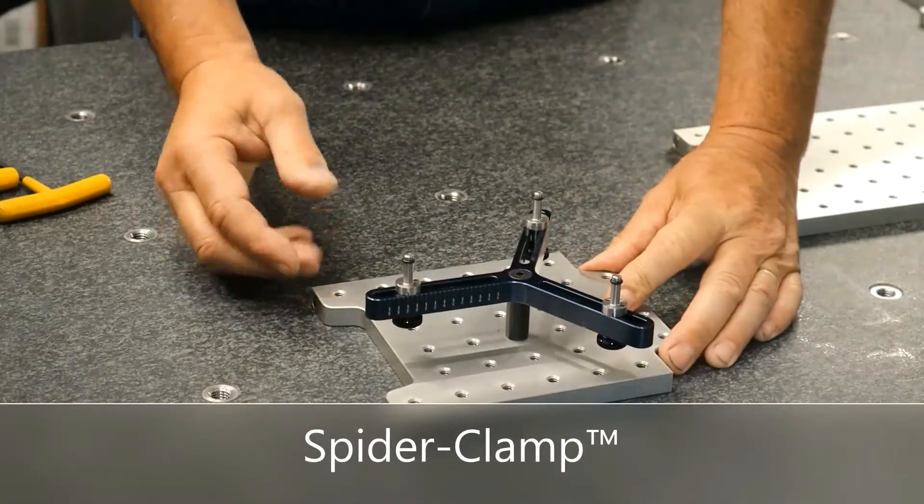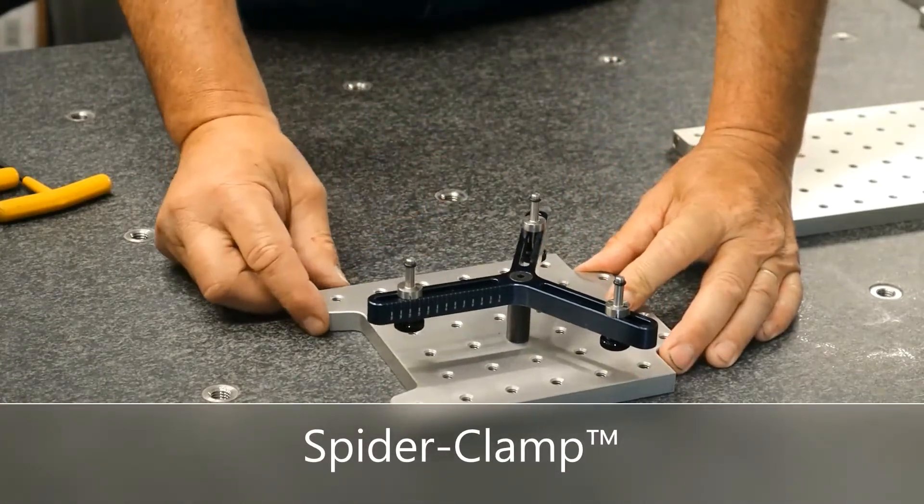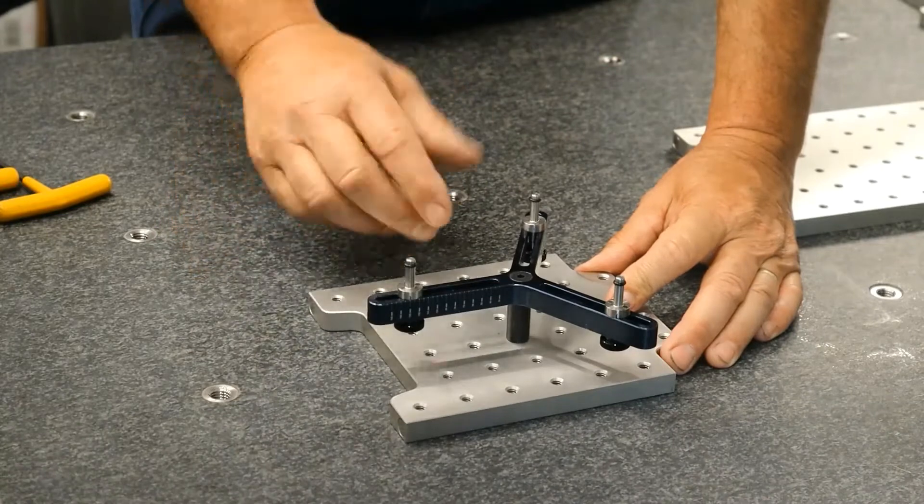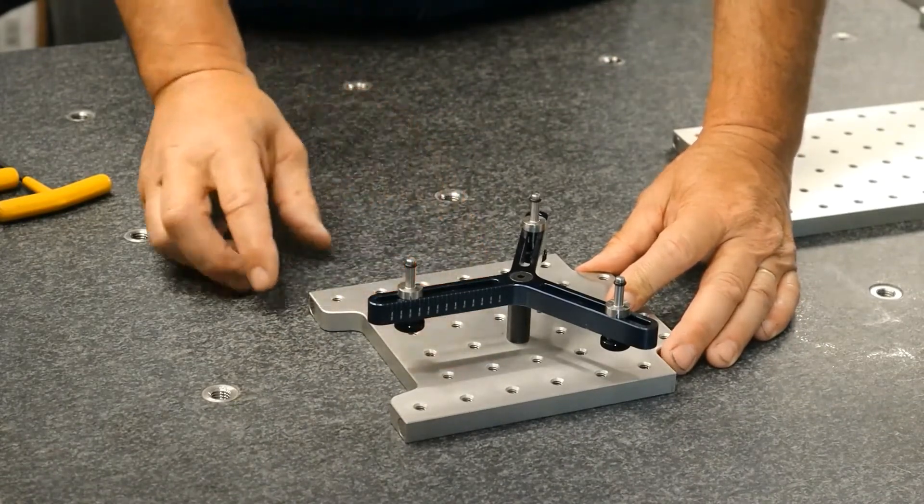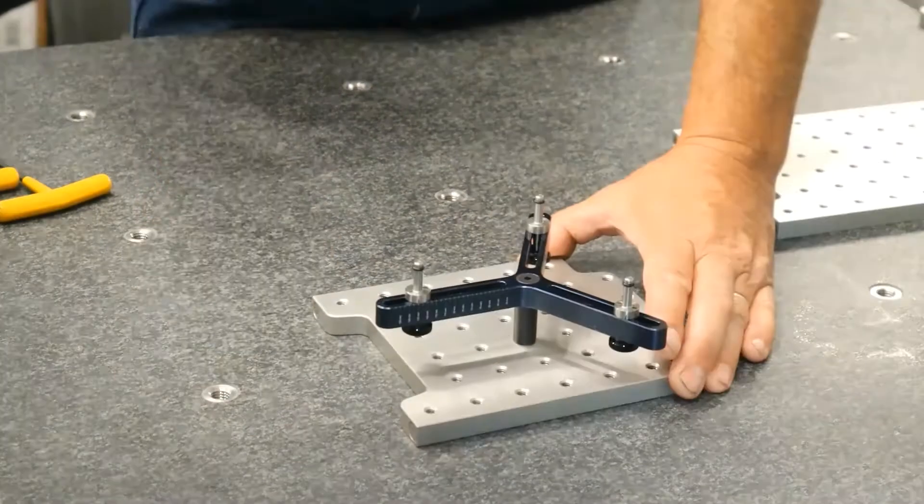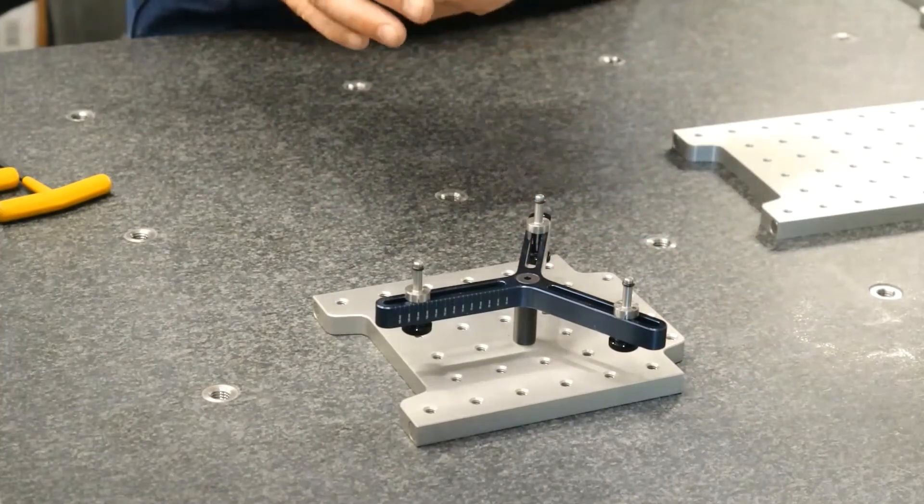Okay, so what we have here is a spider clamp. This is a six-inch spider clamp mounted on a one-inch standoff on a six by six lock and load plate. We had a customer that was holding a part very similar to this, this CD from a CD-ROM.